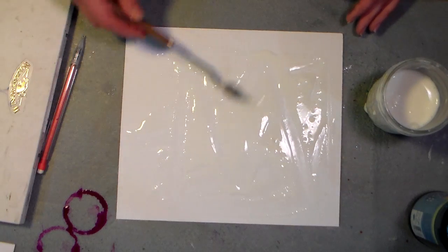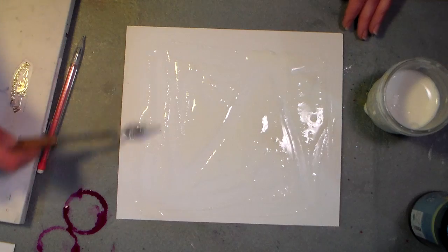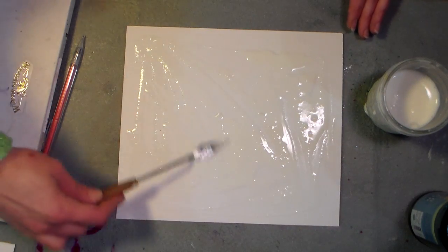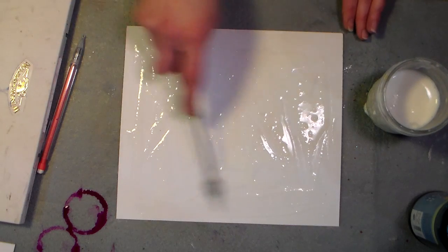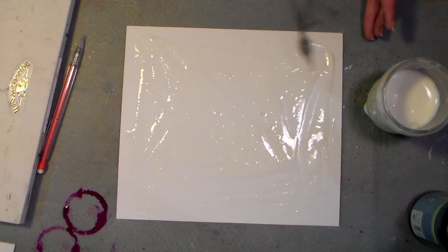So you want to coat this fairly well, and this is going to give you kind of the medium that your ink is going to flow in. And you can use food coloring or liquid watercolors or any sort of flowy ink that you have, so you just want to make sure you get it covered pretty well.